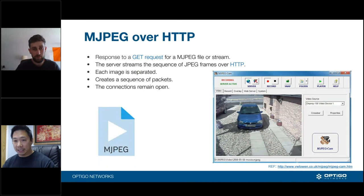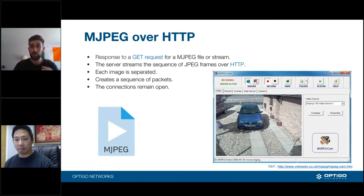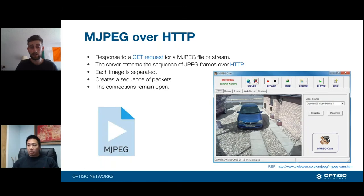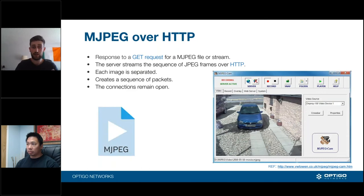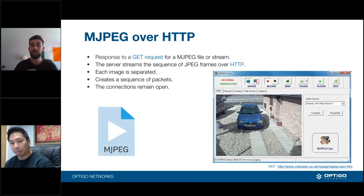An example of an application is Motion JPEG — MJPEG — which sends JPEG images over HTTP. If you're a security guard clicking on a camera feed, that sends a GET request to access the live stream. HTTP sends a sequence of JPEGs one after another to create the appearance of a motion picture. Each image is separated and packaged into a series of packets continuously sent over HTTP to your screen.